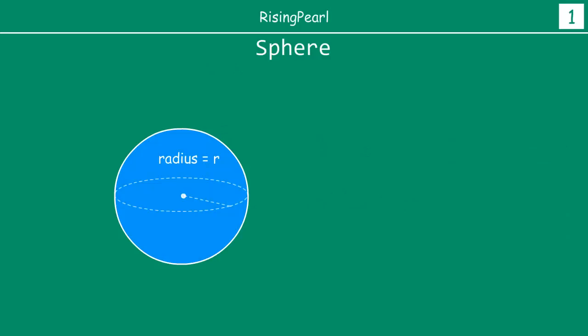Now from our earlier classes, earlier grades, we know what is a sphere, right? Best example of a sphere is like a soccer ball or any kind of ball which is totally round. So the only one dimension or measurement that we really need to know for a sphere is this radius r.